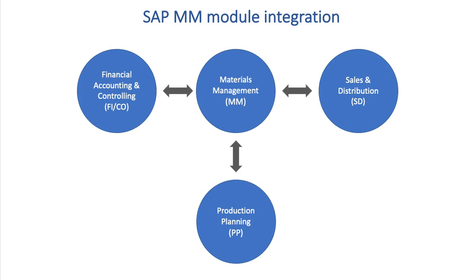Next, SAP MM integrates with production planning, or the PP module. This integration is crucial in manufacturing organizations. For example, when a production order to make a good is created, the MM module supplies the materials that make up the bill of materials.